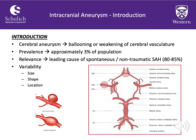Intracranial aneurysms can be characterized by focal protrusions arising from vascular walls or weaknesses, often occurring at major bifurcations within arteries in the brain. Numerous studies have approximated the prevalence in the general population at around 3%. This is relevant largely due to their presentation as the leading cause of spontaneous or non-traumatic subarachnoid hemorrhages, which we typically see in urgent or emergent cases intraoperatively.